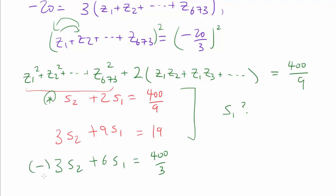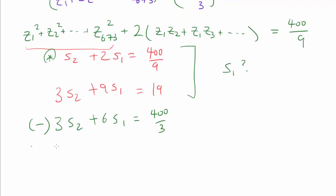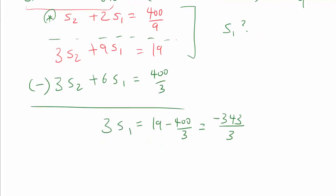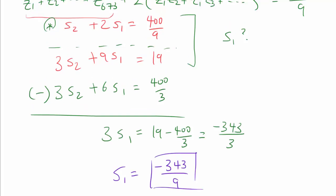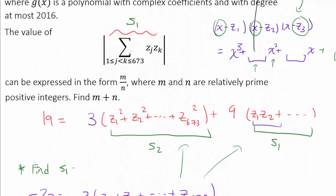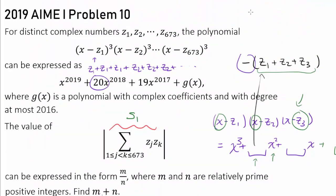And subtract these two equations to get 3 times s sub 1. So we are focusing on these two. Is equal to 19 minus 400 over 3 or 57 minus 400, negative 343 divided by 3. That's telling us s sub 1, the value that we are looking for is negative 343 divided by 9. So going all the way back up, we know our s sub 1 is negative 343 divided by 9. Or this absolute value of s sub 1 is 343 divided by 9.